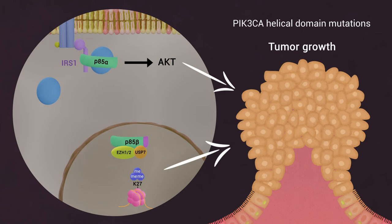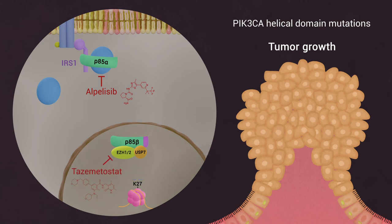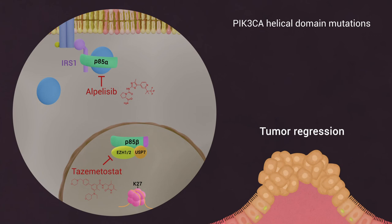Finally, we demonstrate that a combination of alpelisib, a P110 alpha specific inhibitor, and the EZH inhibitor tazemetostat induces regression of xenograft tumors harboring a PIK3CA helical domain mutation in multiple models.